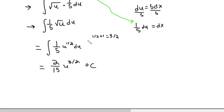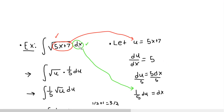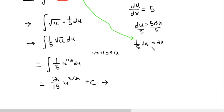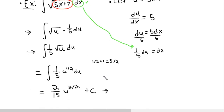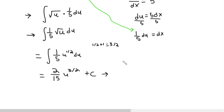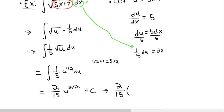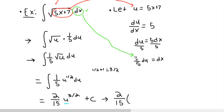Now, what's our last step? Because there's one last step here. We started with x's — our original integral was with x's. We only started using u's to help us integrate; that was just a tool. So our answer must be in terms of x's again, not u's. So, 2/15 — well, what was u? u was just 5x plus 7. So I would say 2/15 times (5x plus 7) to the 3/2 plus c.